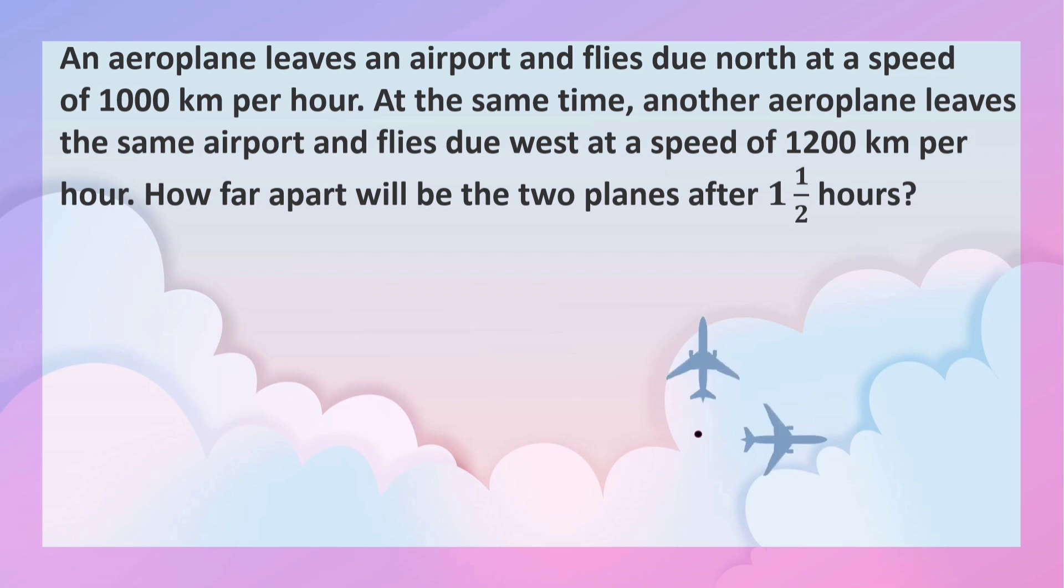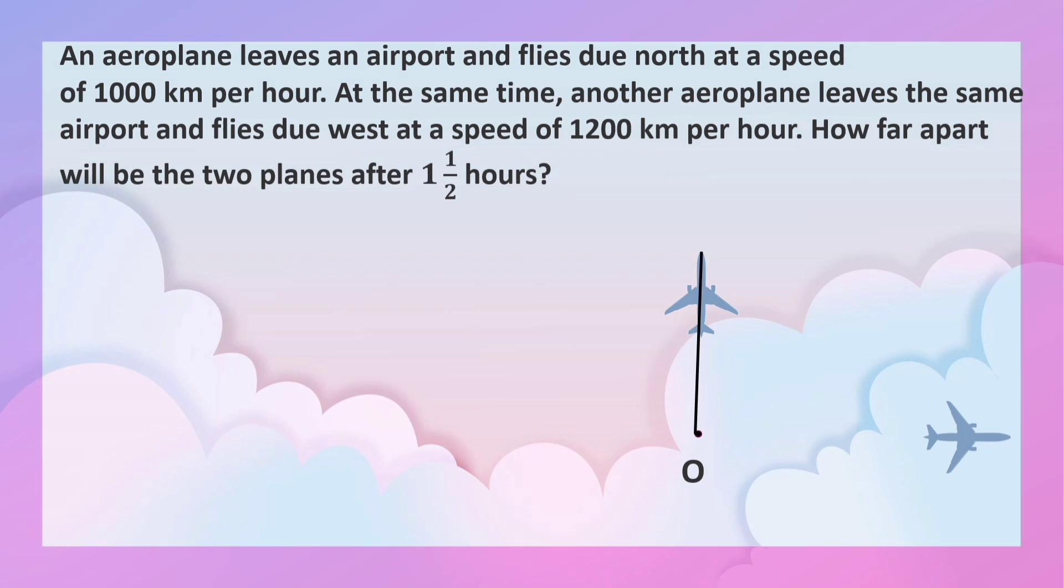Let this be the airport and let us name the airport as O. Let this aeroplane fly due north and this aeroplane fly due west. After one and a half hours, let the first plane reach the point A and the second aeroplane reach the point B. We are asked to find the distance between the two planes, distance AB, after one and a half hours.